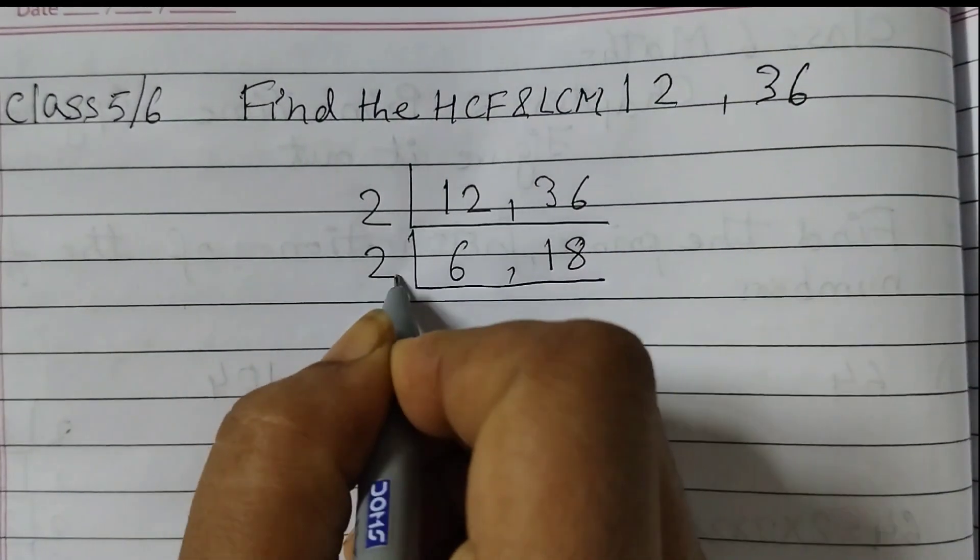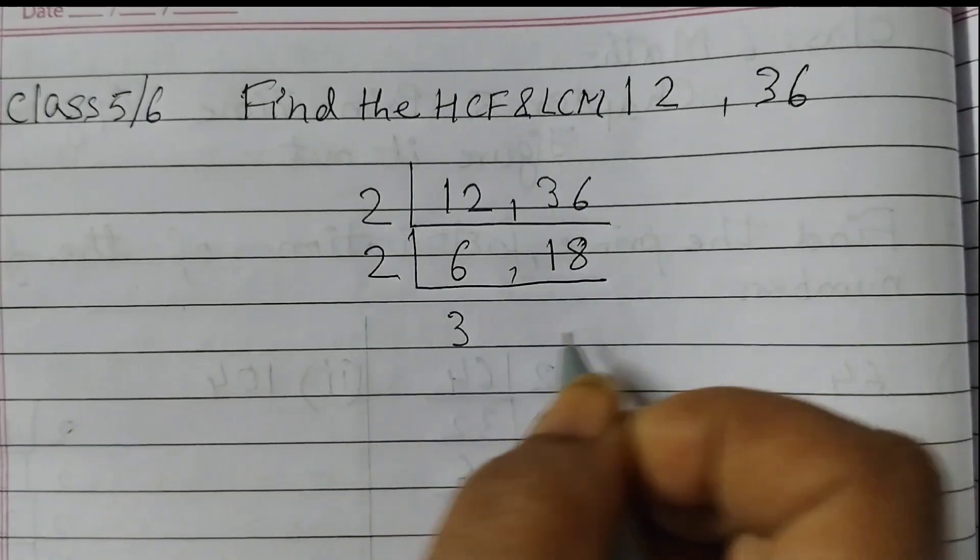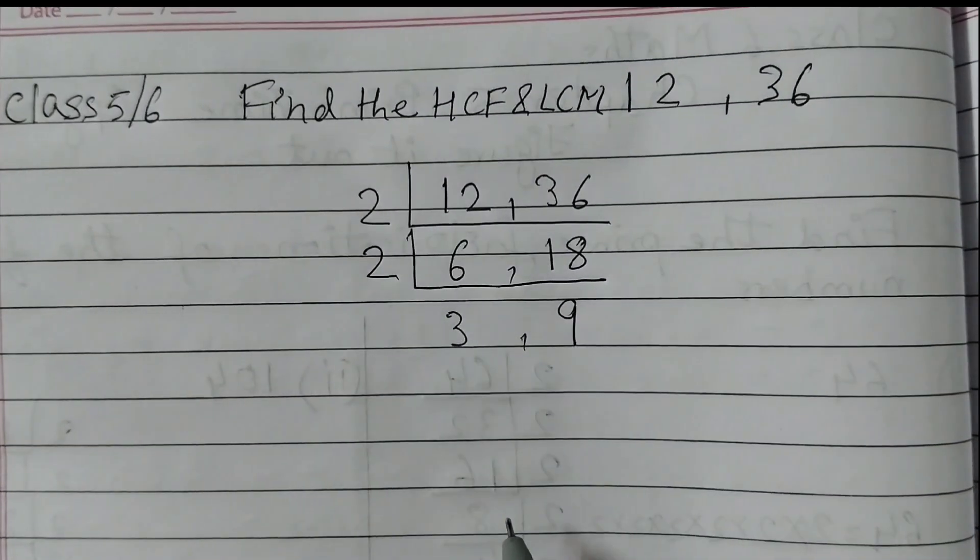Next, we will divide again by 2 because both these numbers are divisible by 2. 2 times 3 is 6, and 2 times 9 is 18.